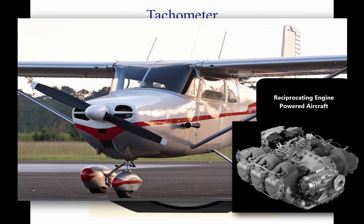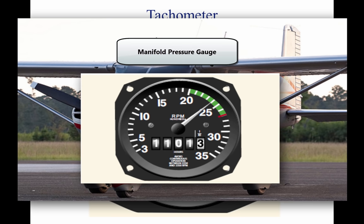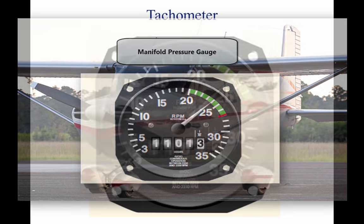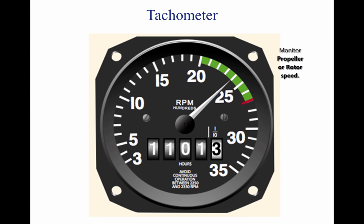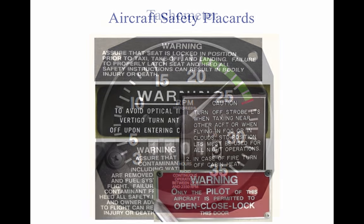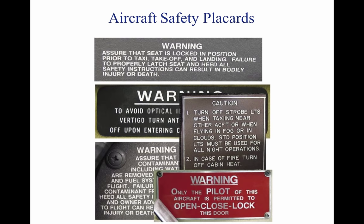All reciprocating engine powered aircraft must have a revolutions per minute, RPM, indicator for each engine. Aircraft equipped with a constant speed propeller or rotor system use a manifold pressure gauge to monitor power output and a tachometer to monitor propeller or rotor speed. Both instruments depict the maximum operating limit with a red radial line and the normal operating range with a green arc. Some instruments may have a yellow arc to indicate a caution area. Most aircraft display placards with information bearing on safe operation, located in conspicuous places and reproduced in the limitations section or as directed by an airworthiness directive.